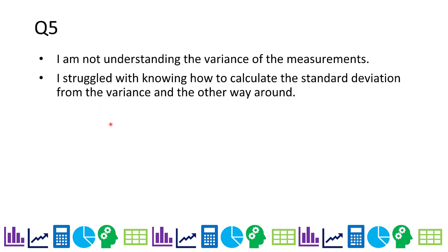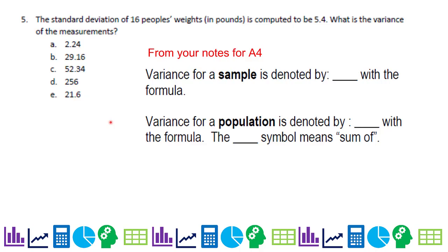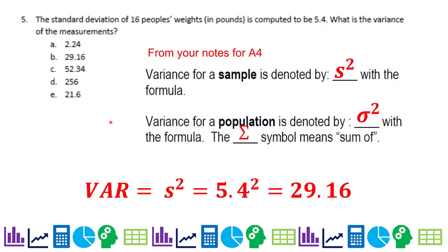Question five: variance of measurement. From your A4 notes, variance for a sample is denoted by S-squared with its formula, and variance for a population is denoted by sigma-squared with its formula. The summation means sum up. If the standard deviation is 5.4, we calculate the variance by squaring it: 5.4 squared is 29.16. So that would be choice B.